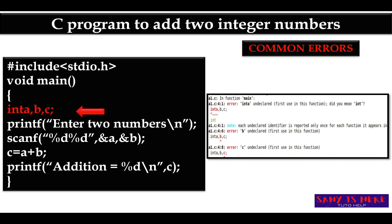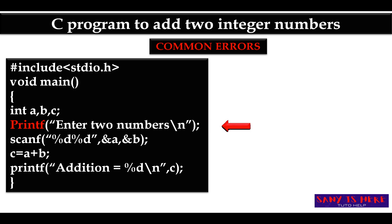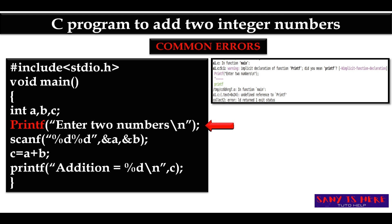Another common mistake is writing 'Printf' with a capital P — you should write it in lowercase. Similarly, while writing 'scanf', you should write it in small letters. The error shown is 'implicit declaration of printf — did you mean printf?', and it suggests changing the capital P to a small p.